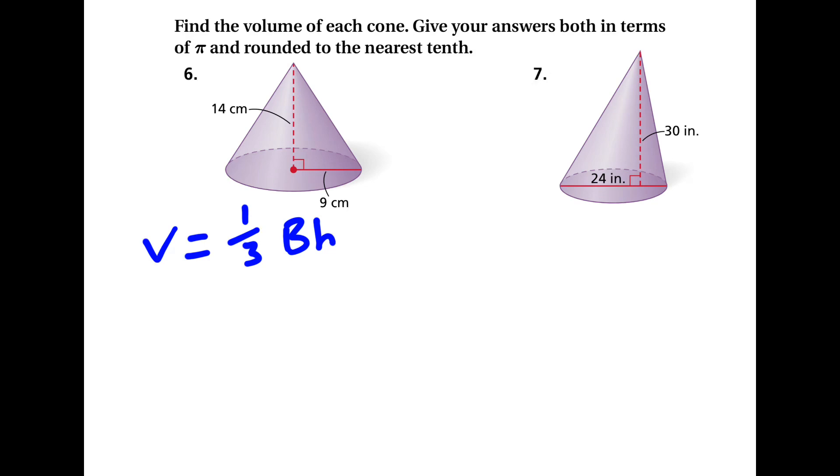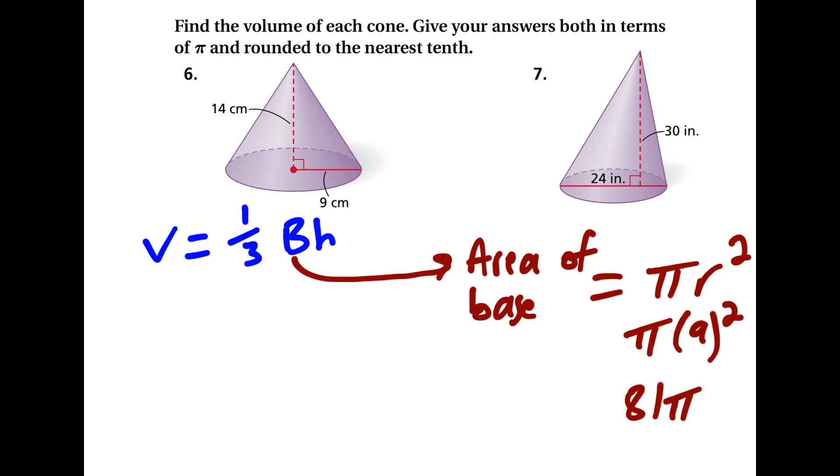Number 6, same formula. Volume equals one-third times the area of the base times the height. The area of the base for this one is a circle, so that's pi r squared, which 9 times 9 is 81 times pi. So that's what we can plug in for the base.